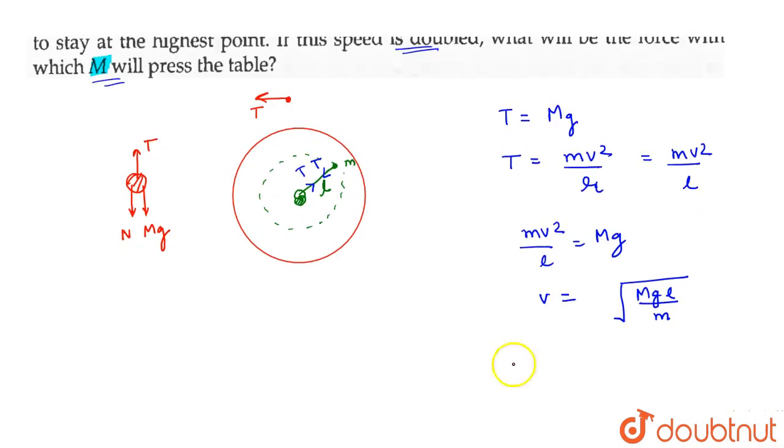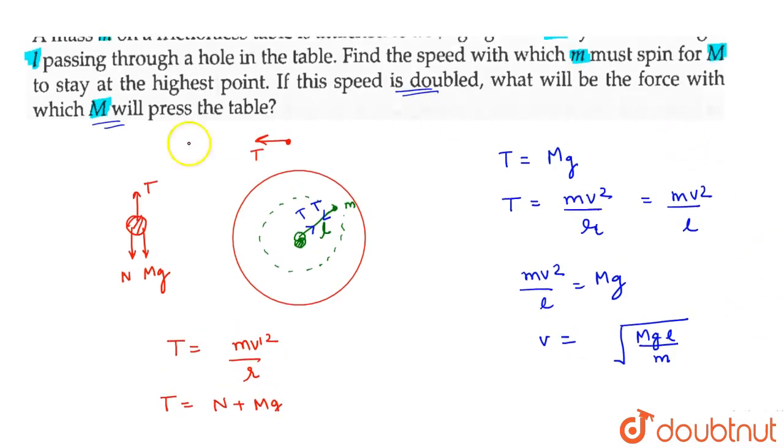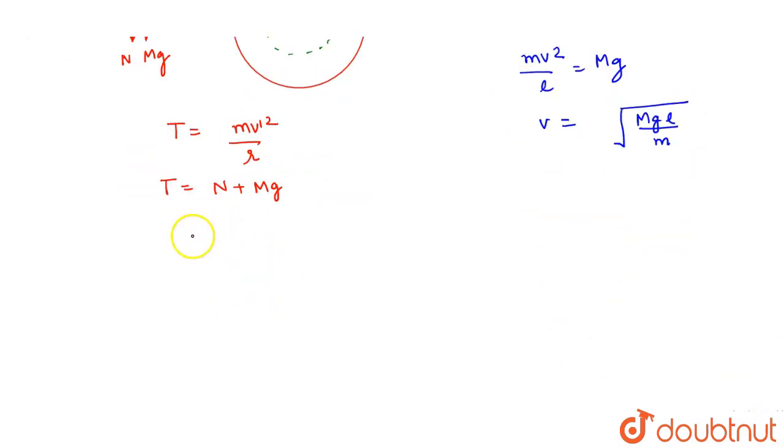So, we will say that T will be M v square divided by R. If we have capital M to N plus capital MG and we will say that T will be the force with which M will press the table. Now, if we have normal reaction, then the normal reaction value is T minus MG and M is capital M.